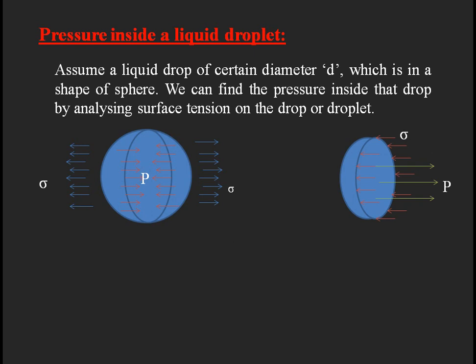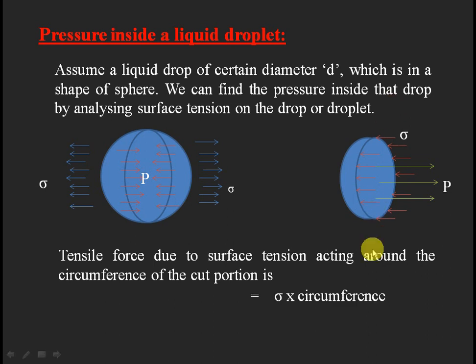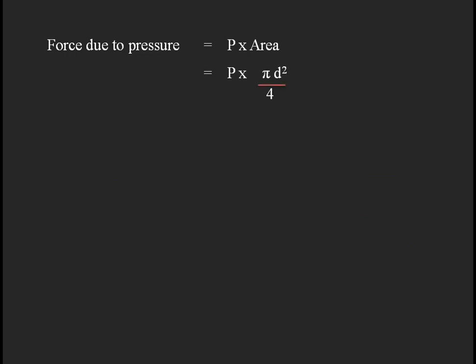By making these two forces equal, we can find the pressure. The tensile force due to surface tension acts around the circumference, so the length equals the circumference. Using the formula force = σ × length, the force due to surface tension equals σ × π × d. For the pressure force, force = pressure × area, and the area of the circle is πd²/4, giving p × πd²/4.